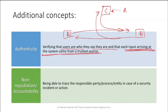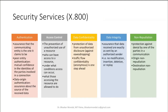That assurance is also needed alongside verifying users are who they claim to be. Non-repudiation means being able to trace the responsible party, process, or entity in case of a security incident. Security services defined in document X.800 include: authentication, access control, data confidentiality, data integrity, and non-repudiation.